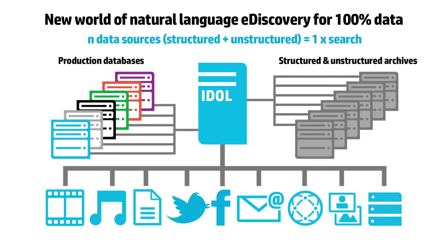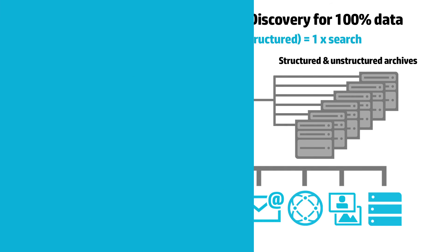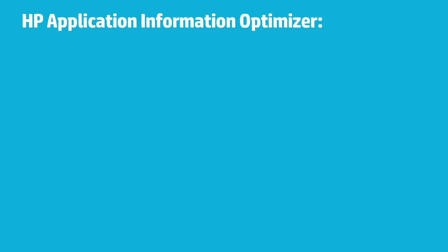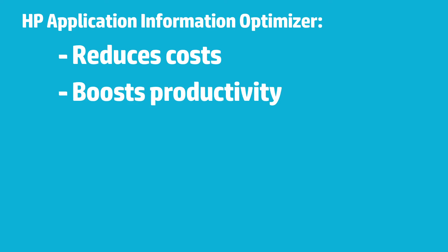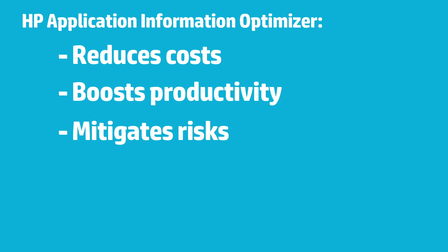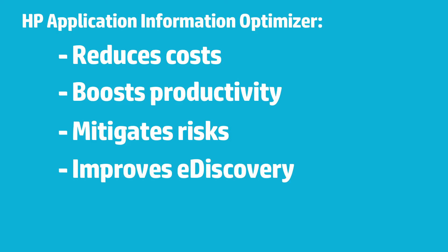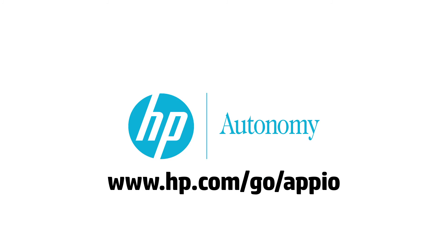This simple and holistic solution for e-discovery delivers unprecedented efficiency and effectiveness in risk mitigation and cost containment. The HP Application Information Optimizer helps organisations significantly reduce storage costs by optimising footprints for databases and their clones. It boosts productivity by accelerating application performance, and mitigates risk by seamlessly moving archived data into information management tools via pre-built integrations. Additionally, it speeds up e-discovery and improves its effectiveness by providing content- and context-sensitive universal search capabilities across structured and unstructured data without SQL queries. For more information, visit the link presented on the screen. Thank you for watching.